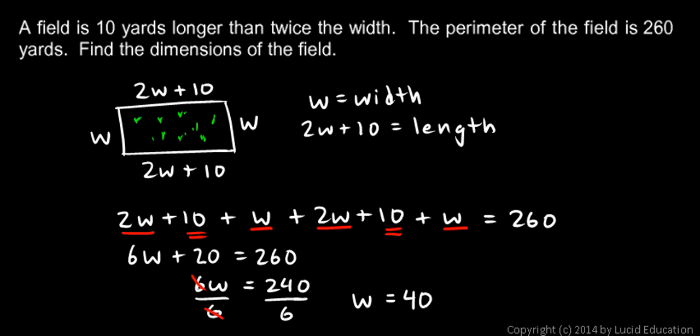So I have an answer. I have W equals 40. Now you need to look back at your problem and see if what you just found is really what you were asked to find. And here we were told to find the dimensions. That means find the length and the width. So I have the width so far. That's a start, but I also need to find the length. And I know the length is going to be 2W plus 10. So I can just compute that, 2W plus 10, because I know the width is 40. I know that 2W plus 10 is going to be 2 times 40 plus 10. And that's going to equal 90.